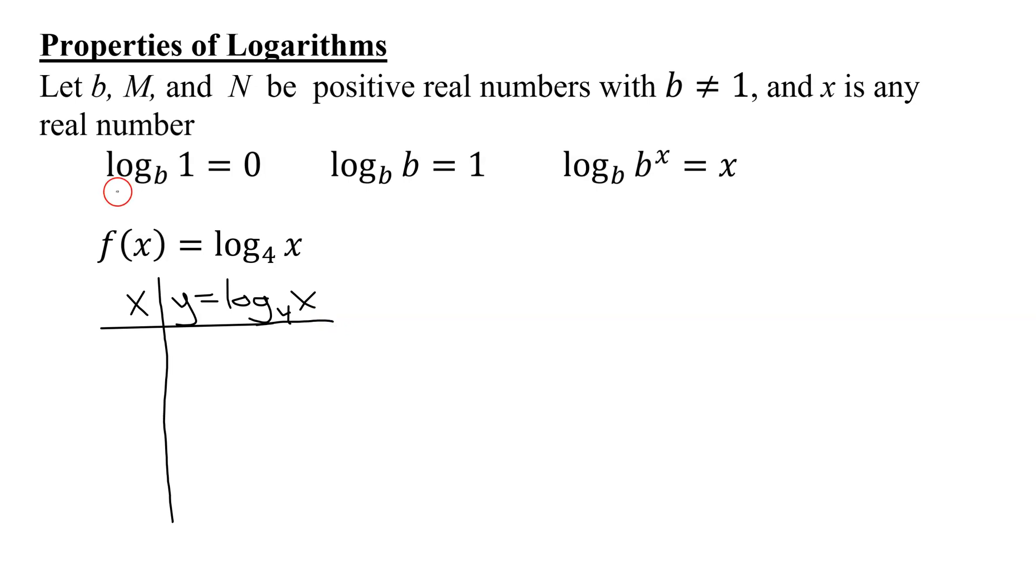The first property I want to use says log_b(1) is always equal to 0, as long as b is a positive real number and is a valid base. So I know that log₄(1) equals 0. When x equals 1, y is going to equal 0.